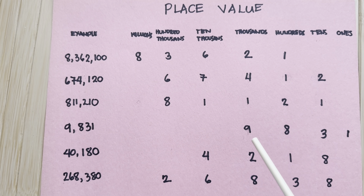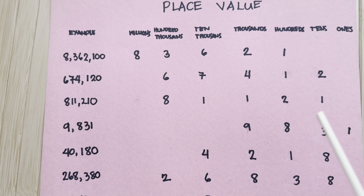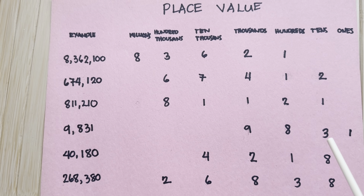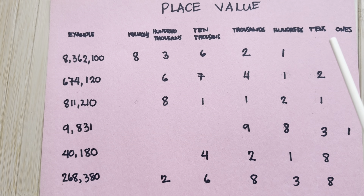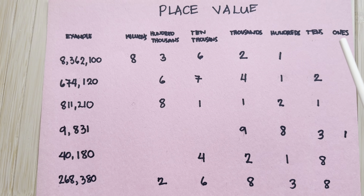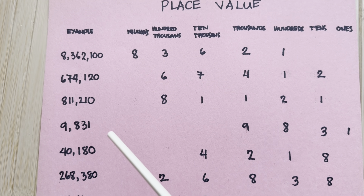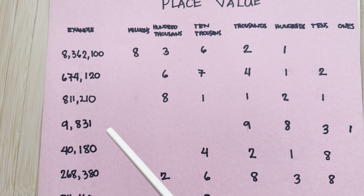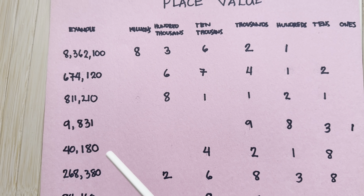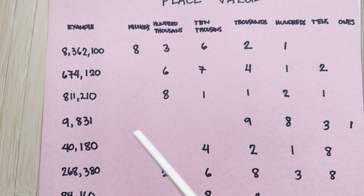Nine thousands plus eight hundreds plus three tens plus one ones is equal to nine thousand eight hundred and thirty-one. Let's check out the next example.